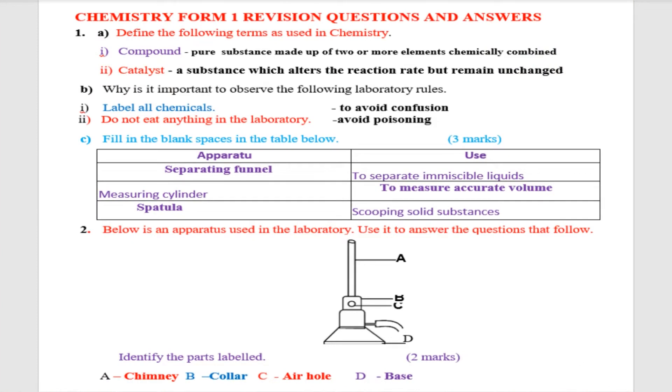Question number one: define the following terms as used in chemistry. We have the first term, compound. What is a compound? A compound is a pure substance made up of two or more elements chemically combined. Two, what is a catalyst? Catalyst is a substance which alters the reaction rate but remains unchanged.